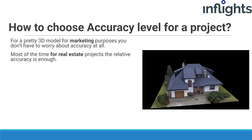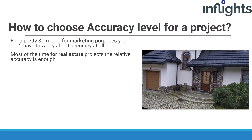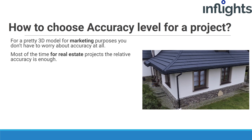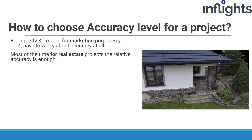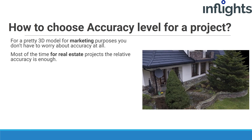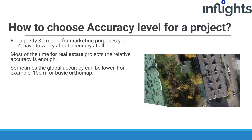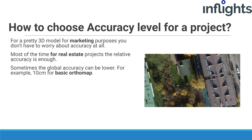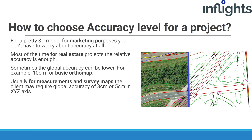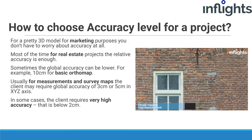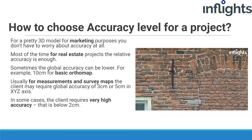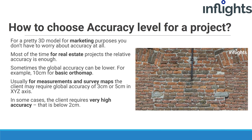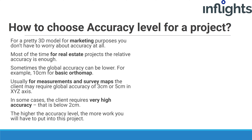For a pretty 3D model for marketing purposes, you don't have to worry about accuracy at all. Most of the time for real estate projects, relative accuracy is enough, though global accuracy can be worse — for example, 10 cm for a basic orthomap. Usually for measurements and surveying maps, the client may require global accuracy around 5 cm in the XYZ axis. In some cases the client will require very high accuracy, below 2 cm, which mostly happens for building restoration works. Remember that the higher the accuracy level, the more work you'll have to put into the project.